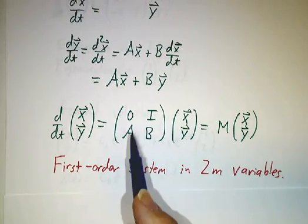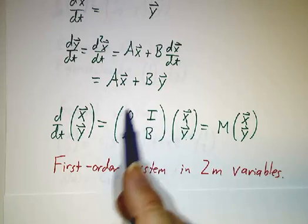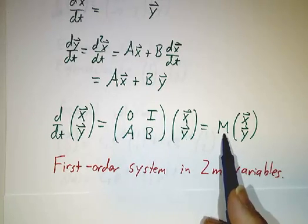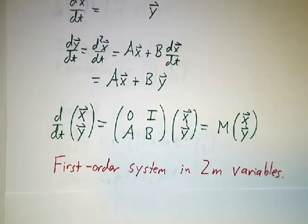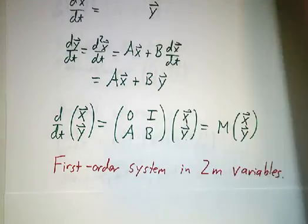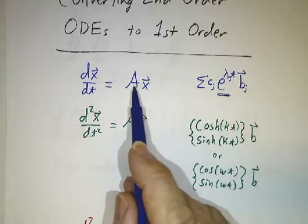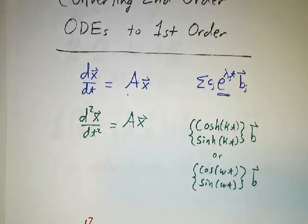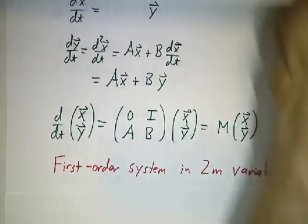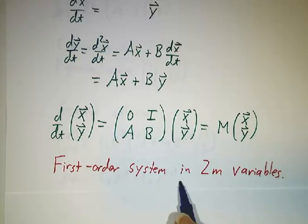And how can you solve that? Well, you find the eigenvalues and eigenvectors of this big matrix M, and you're off to the races using exactly the same methods as for a first-order system. Because it is a first-order system. What's more is you know what the solutions look like. The solutions are always exponentials.